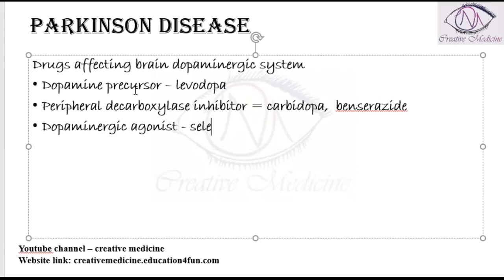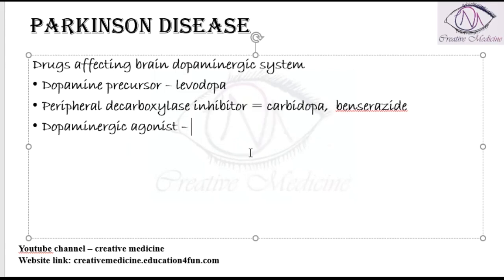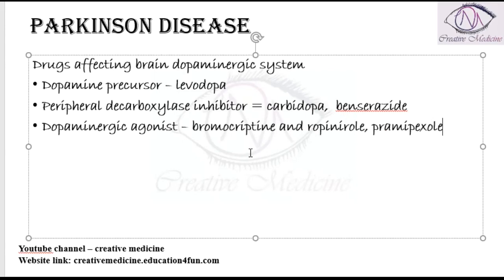Then we have dopaminergic agonists — the dopaminergic agonists are actually bromocriptine, ropinirole, and pramipexole. Then we have monoamine oxidase B inhibitors. These MAO-B inhibitors are selegiline and rasagiline.